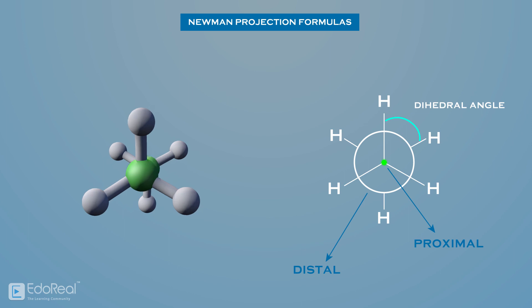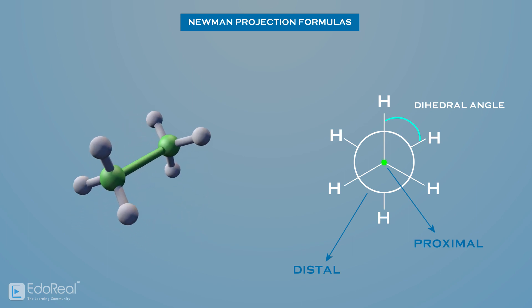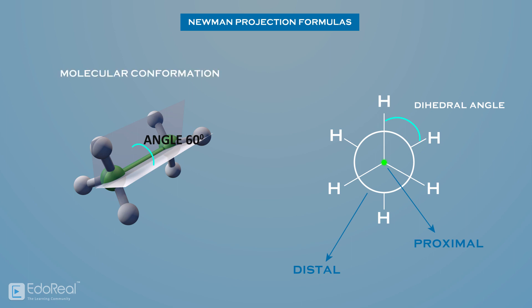Every set of three non-colinear atoms of a molecule defines a plane. When two such planes intersect, the angle between them is a dihedral angle. Dihedral angles specify the molecular conformation. In our example, the angle formed between a C-H bond on the front carbon and a C-H bond on the back carbon is referred to as a dihedral angle.